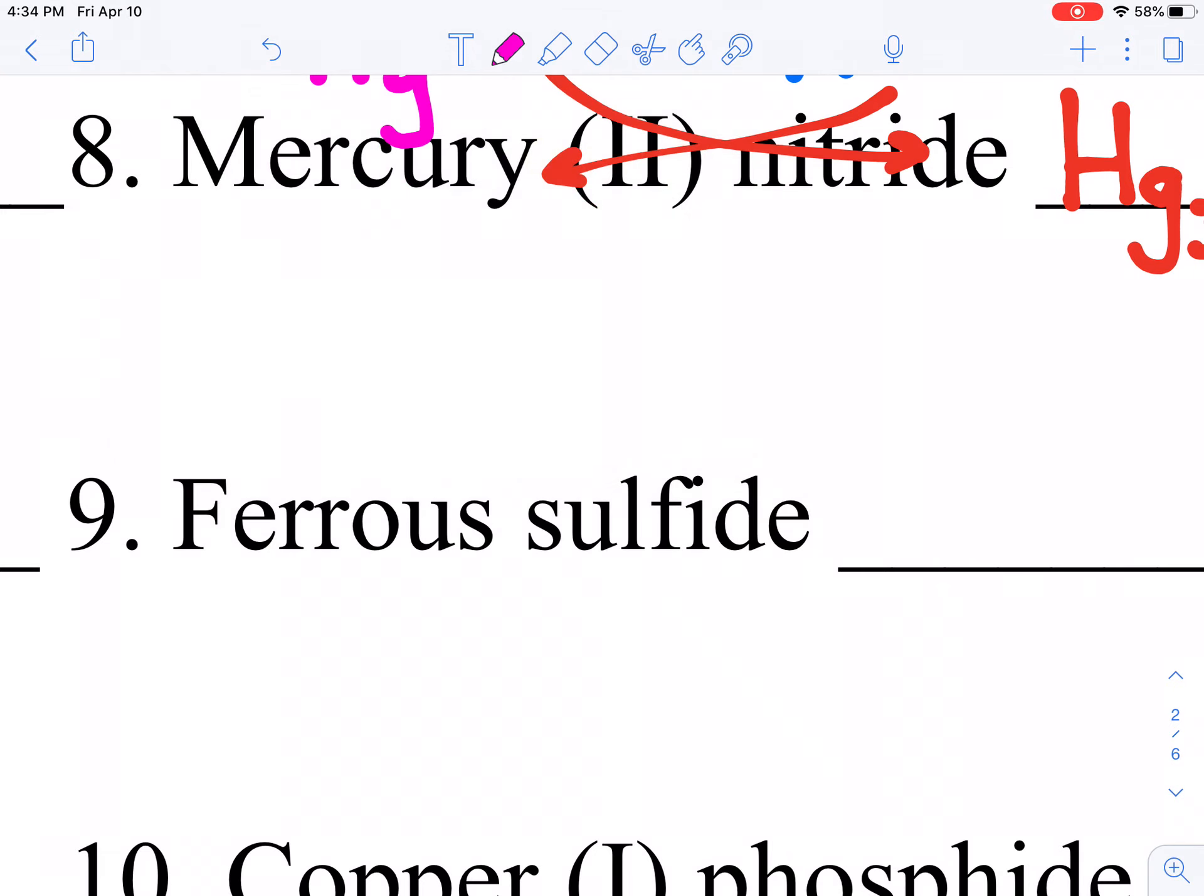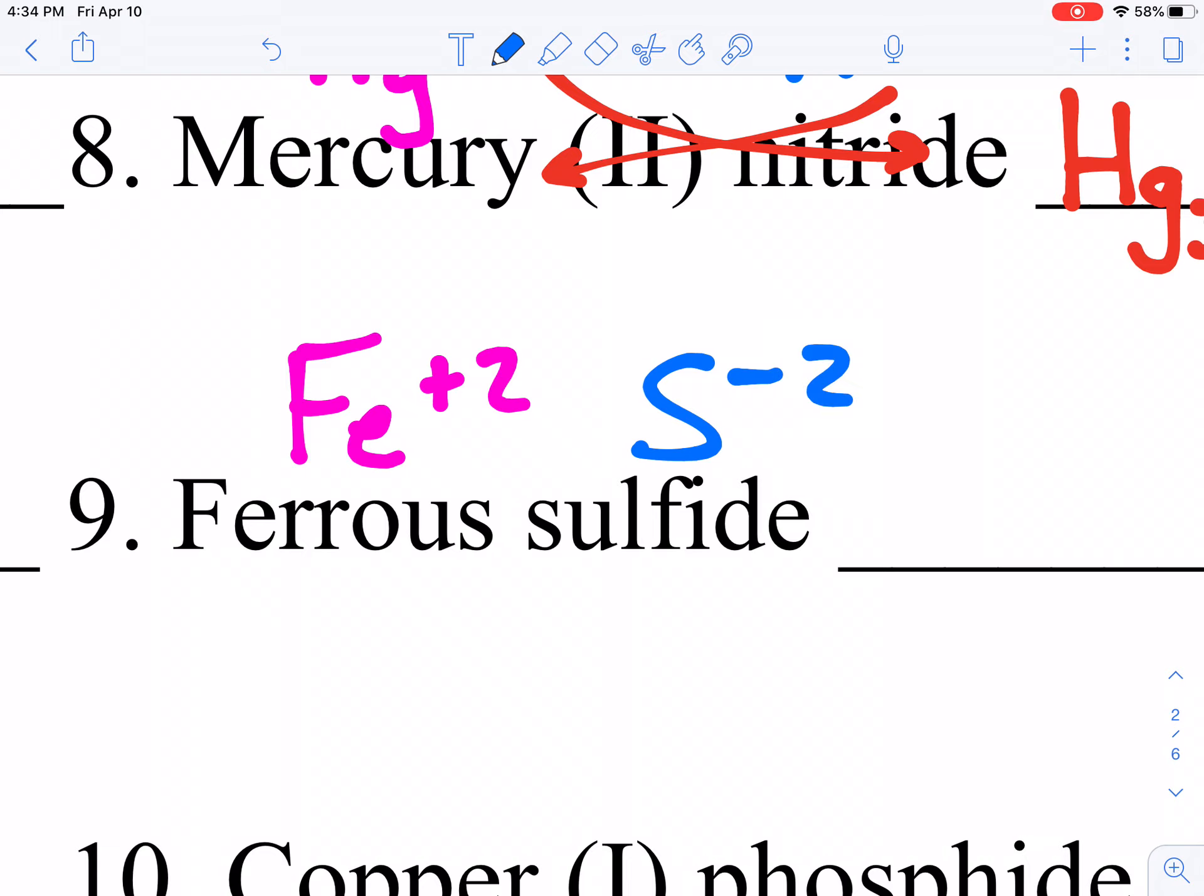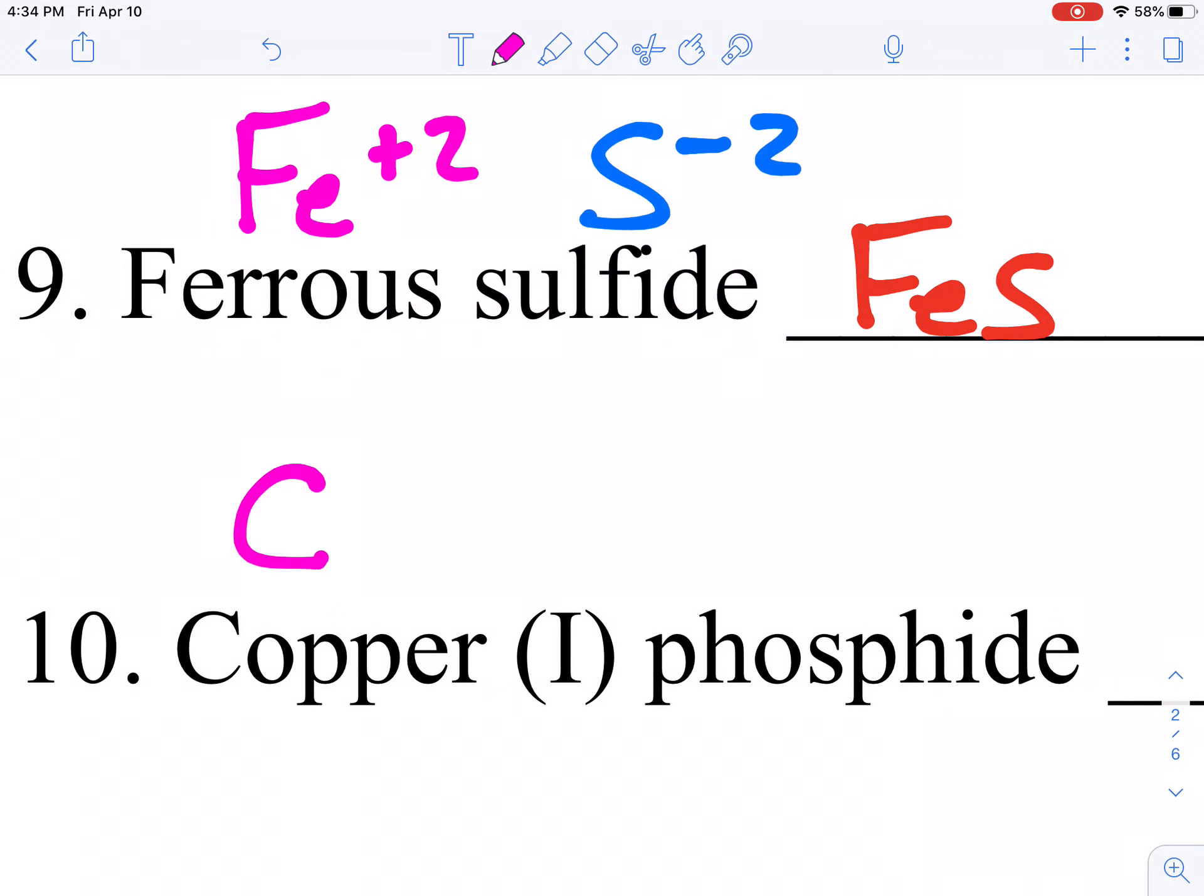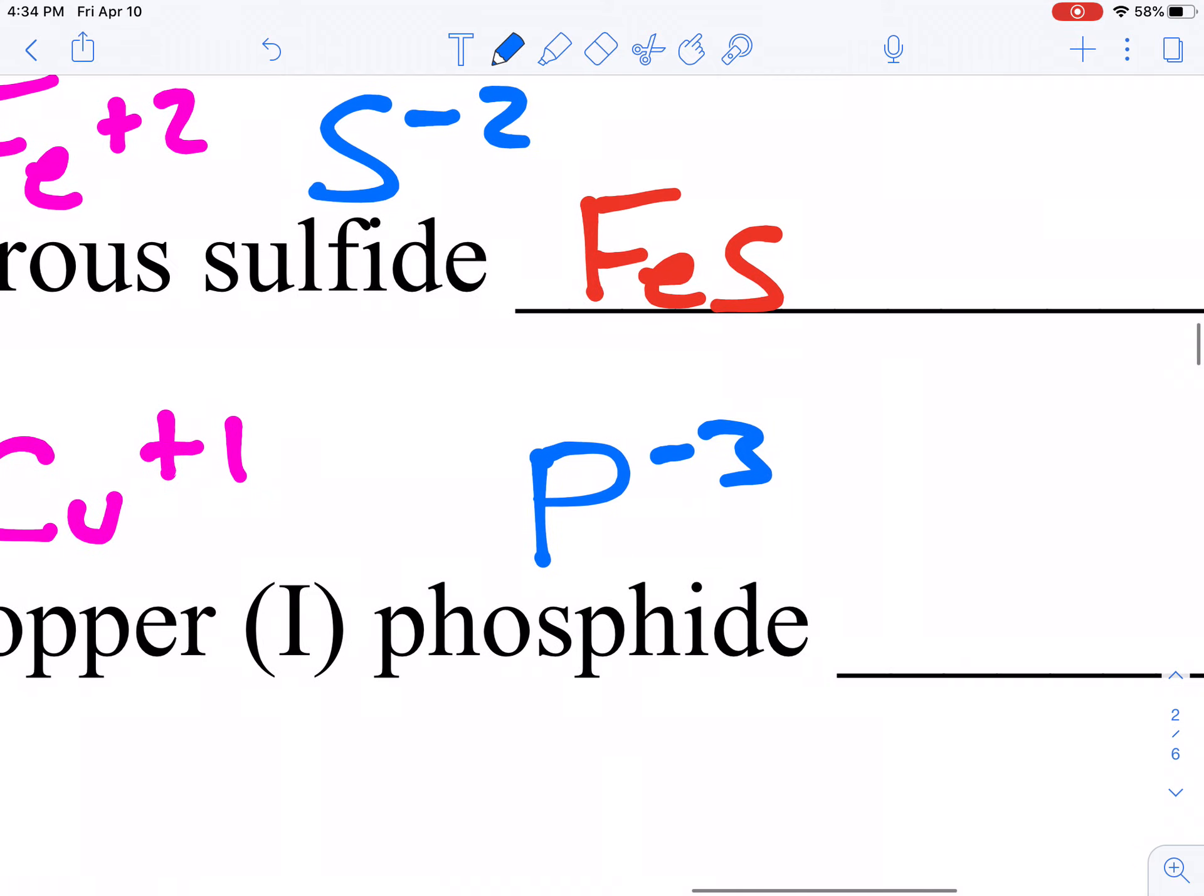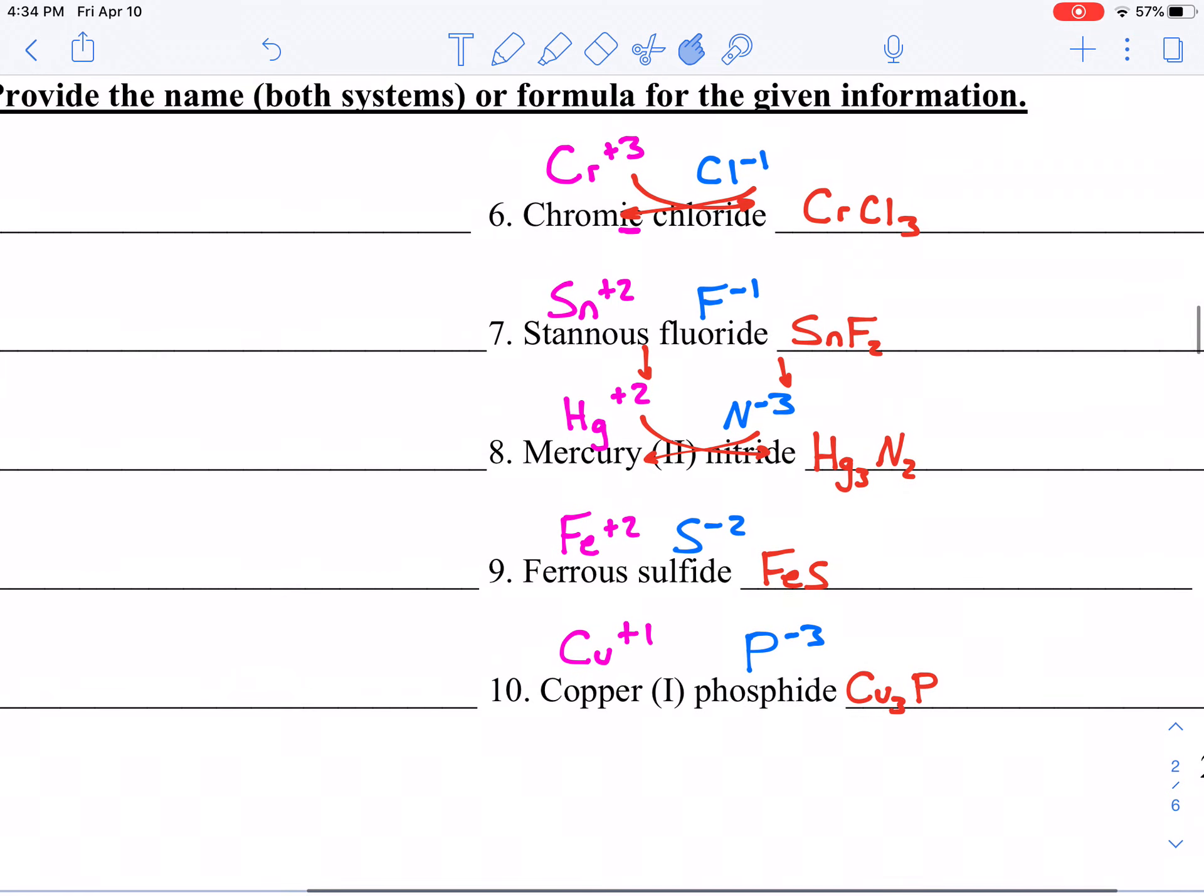Ferrous is also on your list. Notice it's Fe plus 2. Sulfide is sulfur, but as an ion, it's S minus 2. So obviously, those charges are going to cancel out directly, and we will get FeS. And finally, copper 1 is Cu. Roman numeral 1 means plus 1 charge, and phosphide is P, and it has a minus 3 charge. So we are going to need 3 of those coppers. So Cu3, and then P. All right, so we've done, dare I say, the easier side. We've gone name to formula.